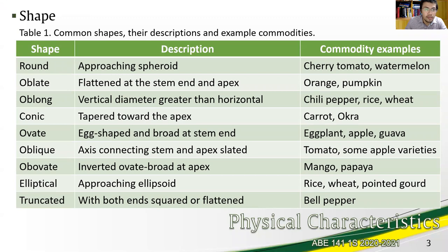Table one shows the listing of the common shape descriptions of AB materials with the description and commodity examples for each classification. We start with round, the description is approaching spheroid, and examples will be cherry tomato and watermelon.